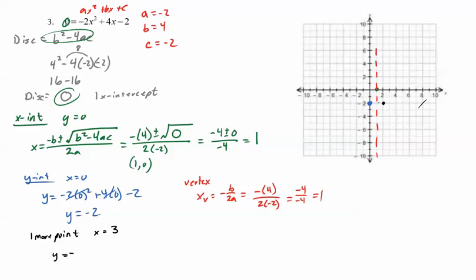So we'll go y equals negative 2 times 3 squared plus 4 times 3 minus 2. So y equals negative 2 times 3 squared is 9. 4 times 3 is 12. And then we've got y equals negative 18 plus 12 minus 2, which will give us a total of negative 8. So when x was 3, y was negative 8. So we put that down, 3, negative 8, and that kind of fits what we expect.